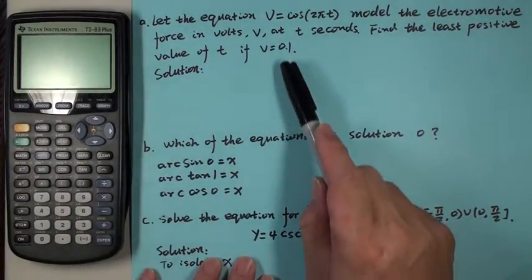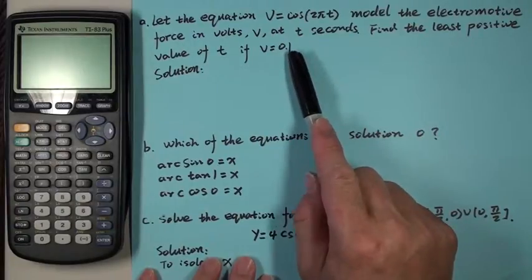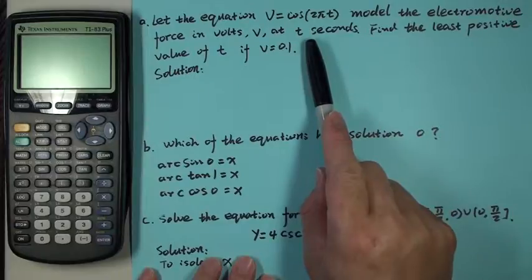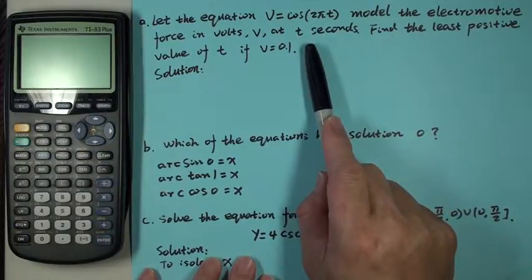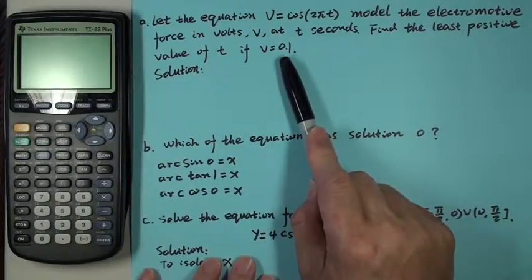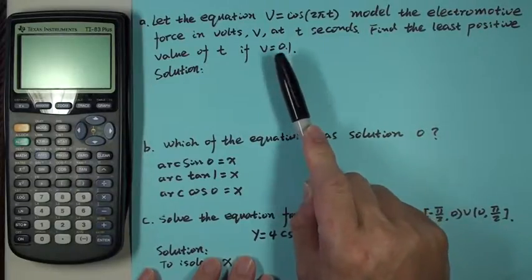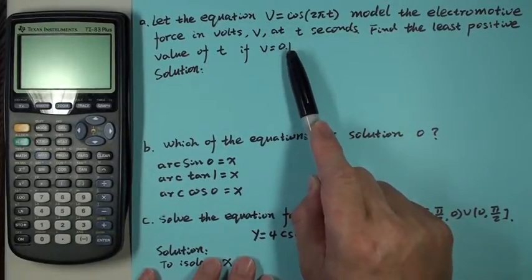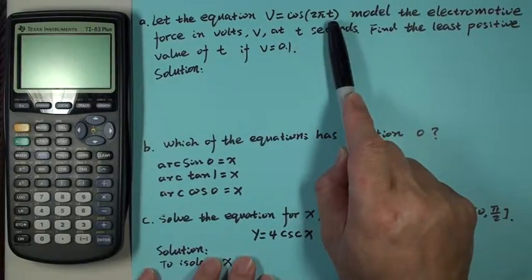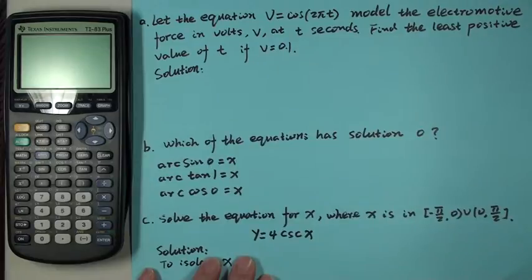We know trigonometric functions are used a lot in electronics. This question is an application question where you are given value V equals 0.1, and you want to find T with your calculator.